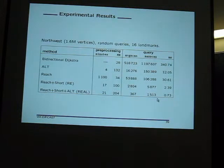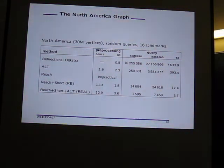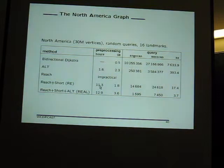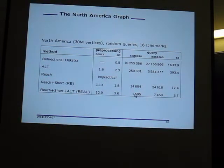For bigger graphs — this is the 30 million vertex graph of North America road networks, which includes the US, Canada, and parts of Mexico — running the reach computation is quite practical. The reach area algorithm, which is reach-based shortest paths, is practical, and combining all of these gives reasonable preprocessing and space overhead while finding the shortest path.